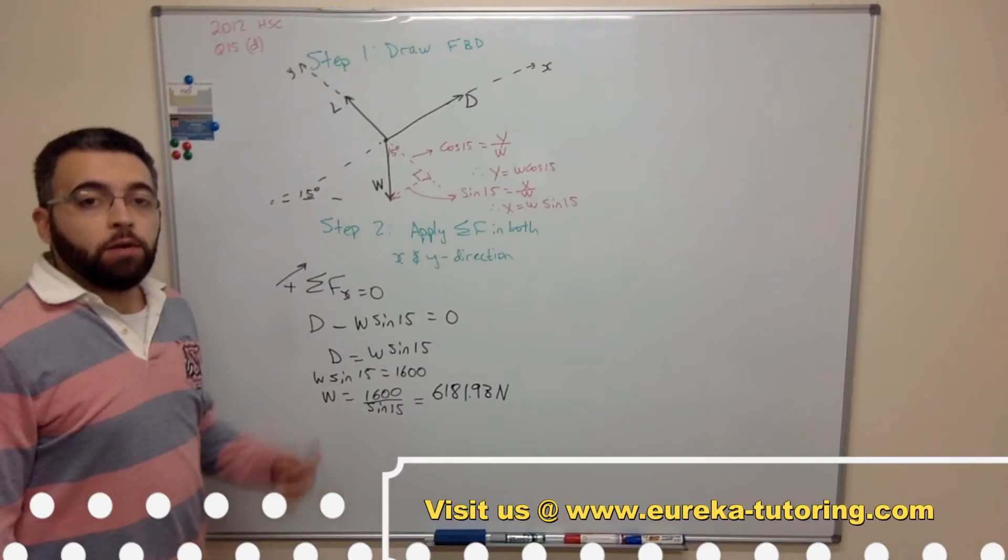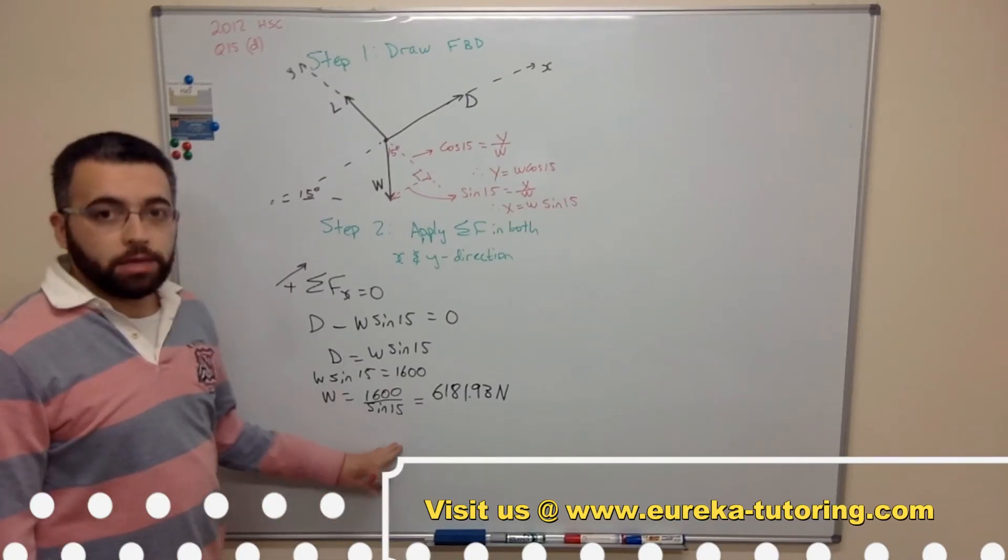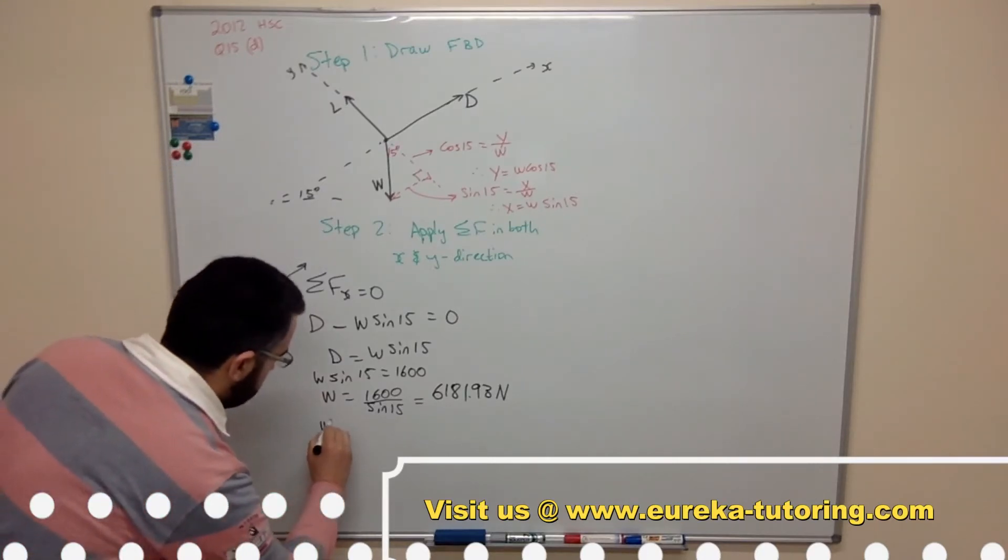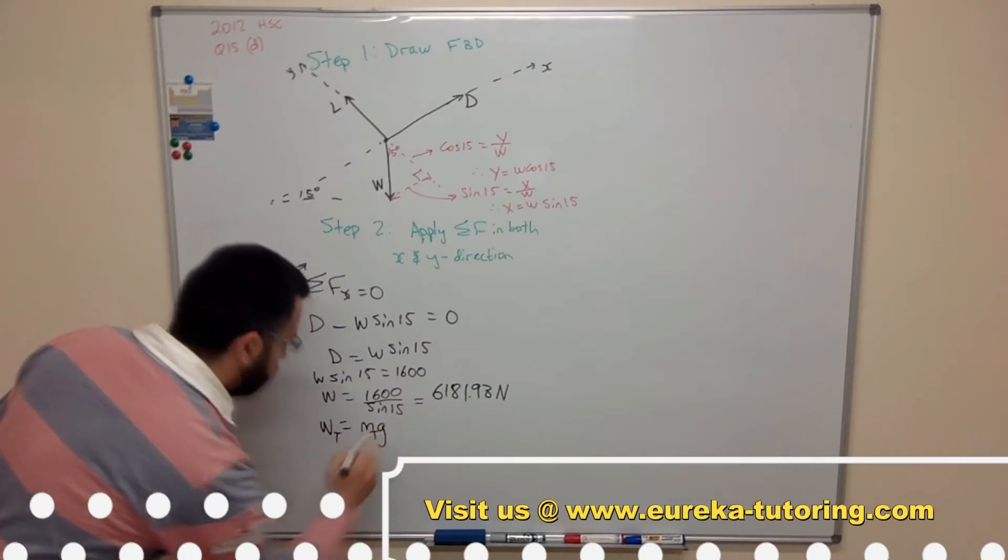So that's our total weight. However we are interested in the mass of the glider. So I'm going to convert this to a mass. Now we know that the weight force equals mass times gravity. So w equals mg.